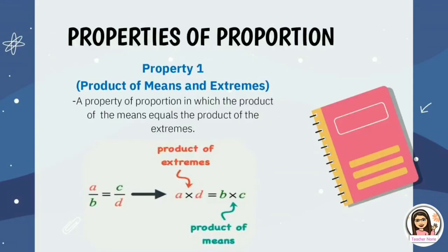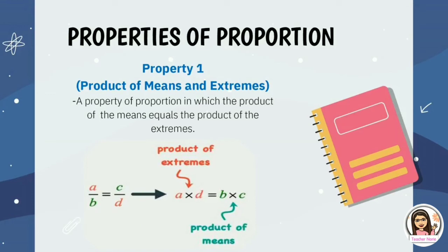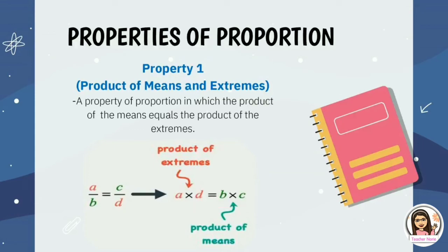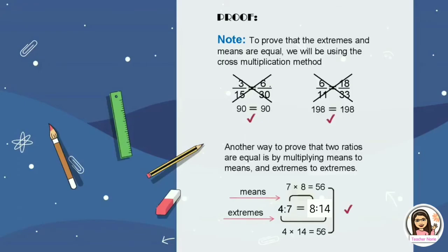Let's now have the properties of proportion. Property 1: the product of means and extremes. This property states that the product of means equals the product of extremes, and cross multiplication is applied. For A over B equals C over D, A will be multiplied by D and B will be multiplied by C. It is a proportion if the product of means and extremes are the same, which we verify using the cross multiplication method.